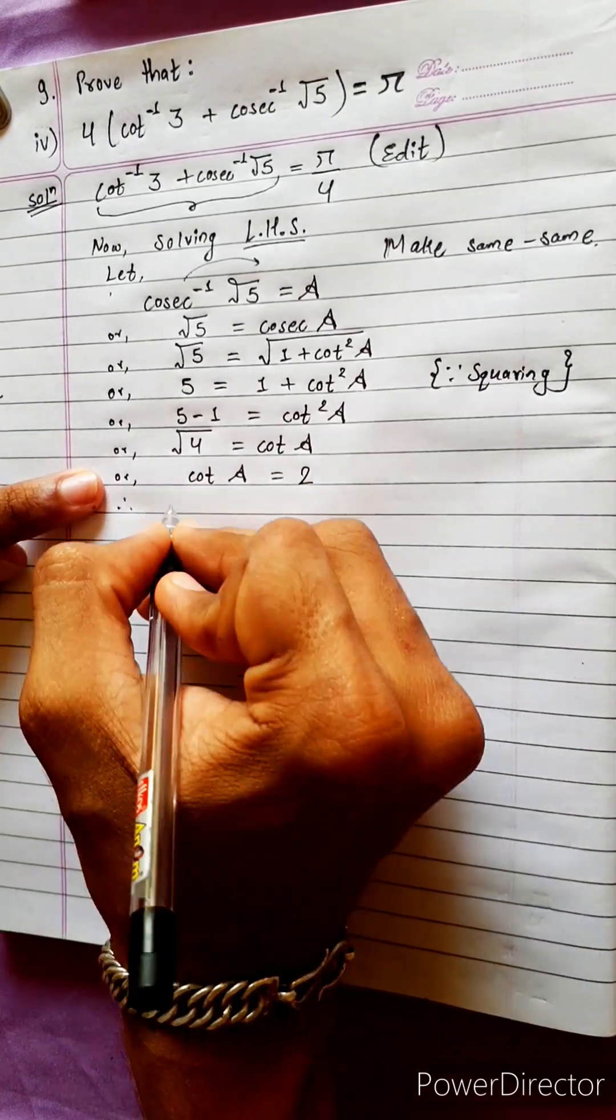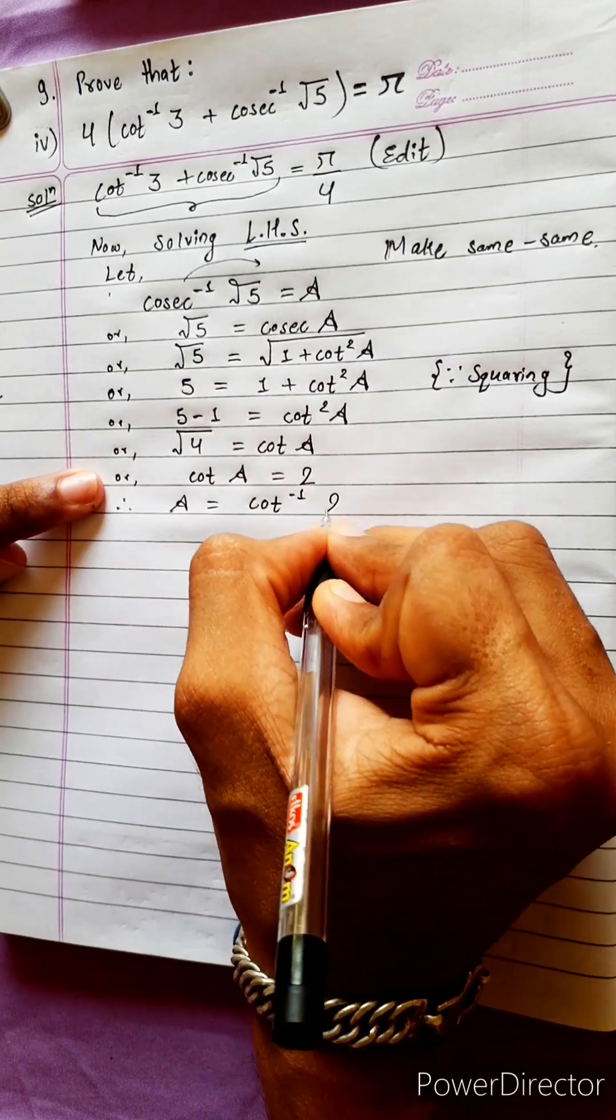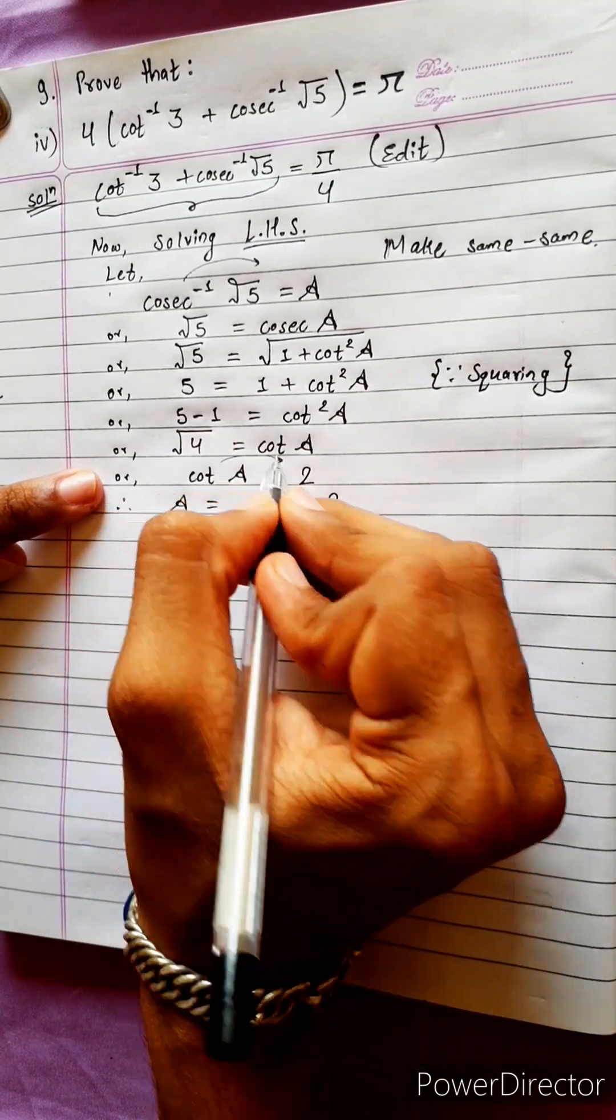So, therefore, A equals to cot inverse 2. So, cot is equal to 2.